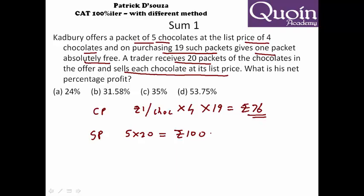Cost price is seventy-six, selling price is hundred, profit is twenty-four. Twenty-four upon seventy-six is less than one-third, which is less than thirty-three percent, so you can make out the answer is option B. It can't be as low as twenty-four.